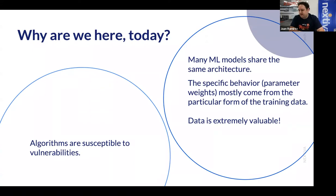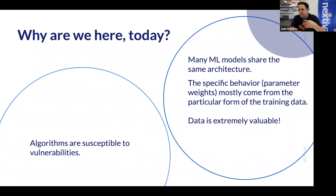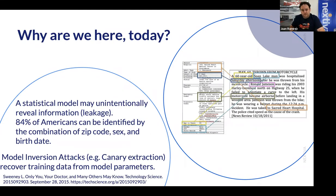In machine learning, models are created empirically — they are trained on data. Many machine learning models share the same underlying structure, and what really characterizes one application from another mostly comes from the training data you use to create your application. So that training data is going to be extremely valuable, and we do want to prevent leakages.